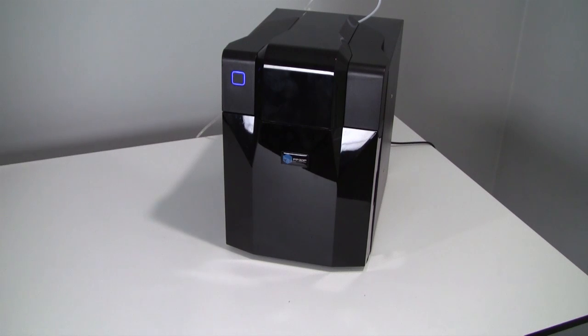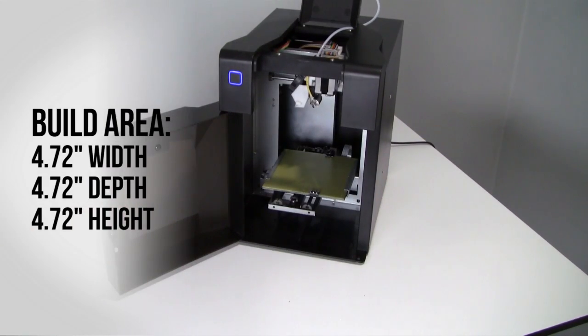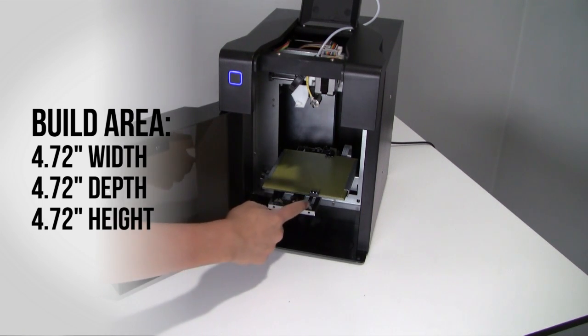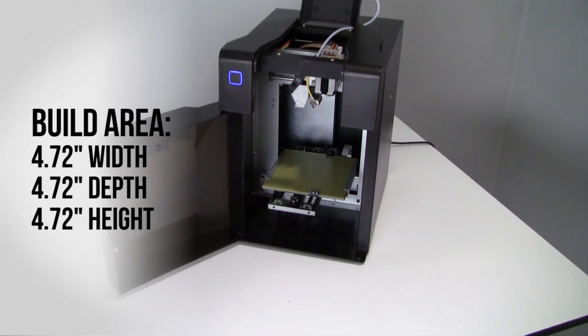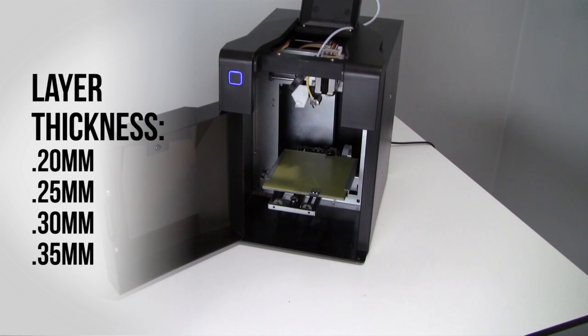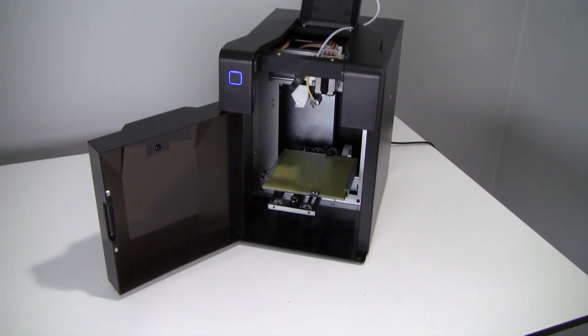Inside the UP Mini is where all the magic happens. It has a 120 millimeter cubed print bed—that's about 4.72 inches to be exact for width, depth, and height of the model you'll be printing. Layer thickness on the print is 0.2 to 0.35 millimeters, or 200 to 350 microns, in terms of the layer thickness or pitch of the resolution that it can print to. Print speed is 10 to 100 centimeters cubed per hour. The print head is right up top here, and the print bed is down the bottom.